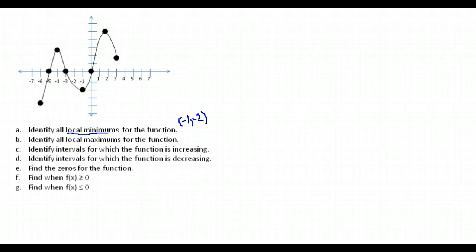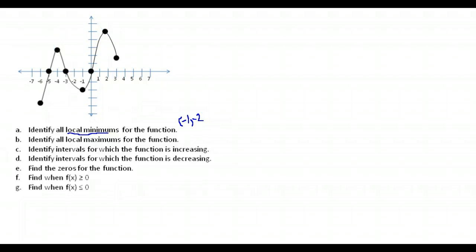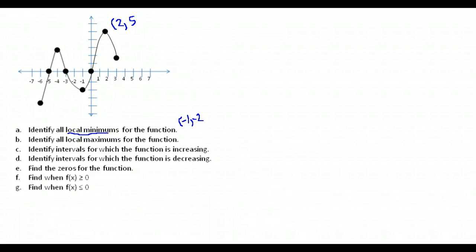Next: identify all local maximums — the high points on the graph. We have two: one goes down on either side at the point (2, 5), and another at the point (-4, 3). Both are confirmed local maximums since the graph descends on either side of each.